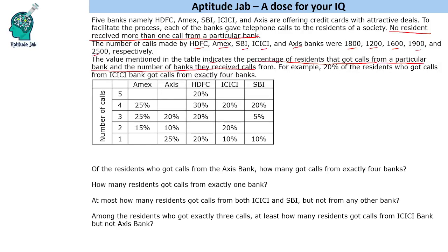For example, 20% of the residents who got a call from ICICI bank got calls from exactly four banks. This is the percentage of users that got calls from these banks — like 20%, 20%, 10% — and this is the number of calls they received. So 20% from ICICI bank got four calls. Similarly, 15% of the people who got calls from MX got calls from two banks.